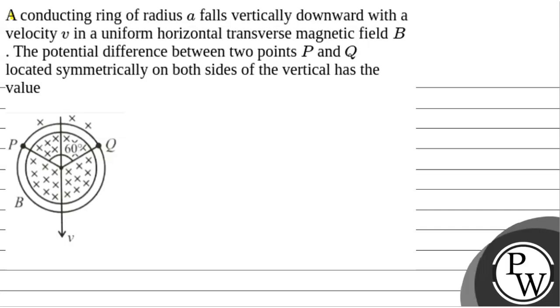The question says that a conducting ring of radius A falls vertically downward with a velocity V in a uniform horizontal transverse magnetic field. The potential difference between two points P and Q located symmetrically on both sides of the vertical has the value.